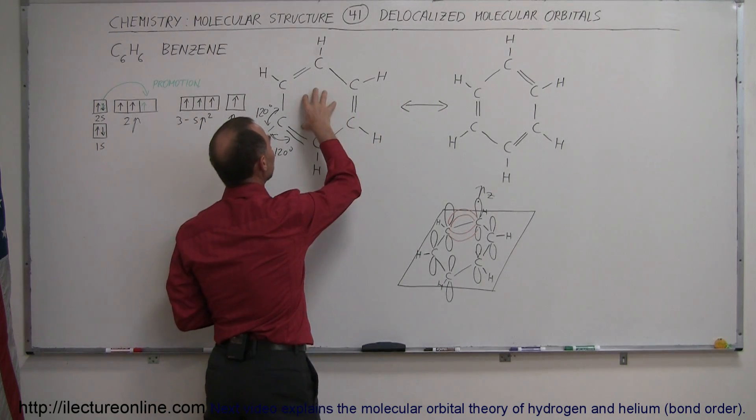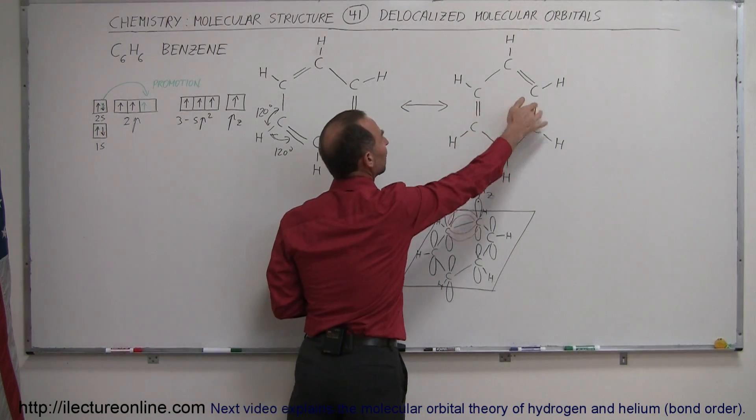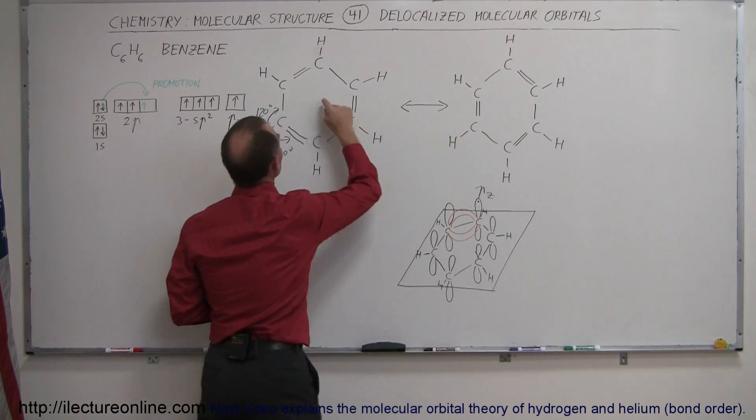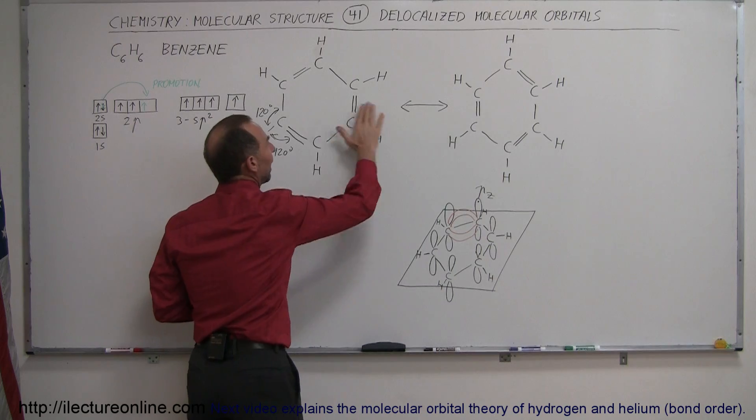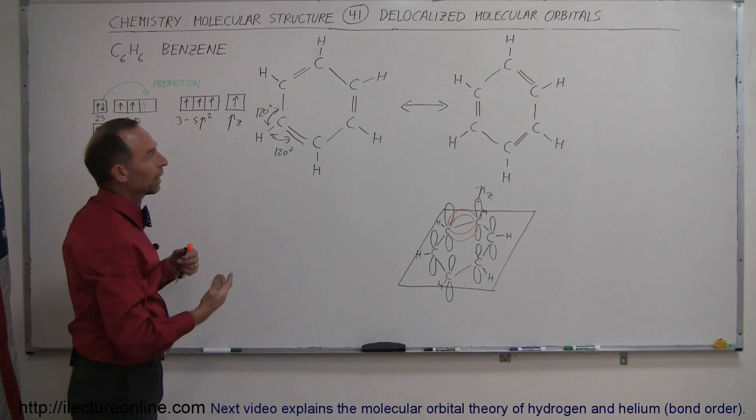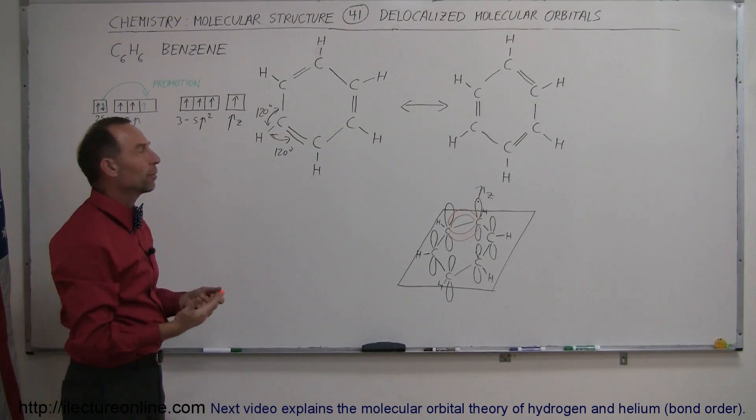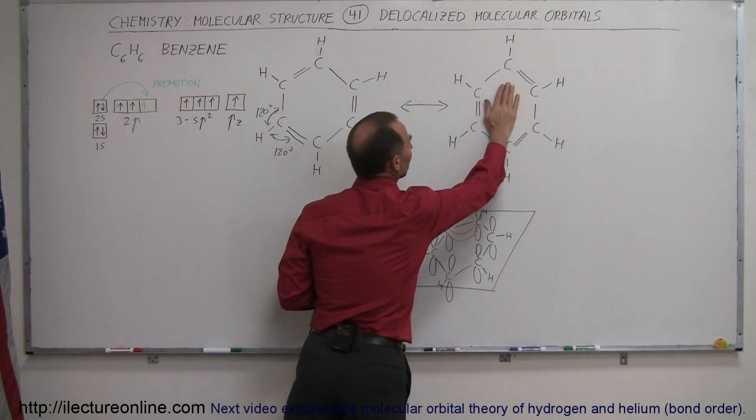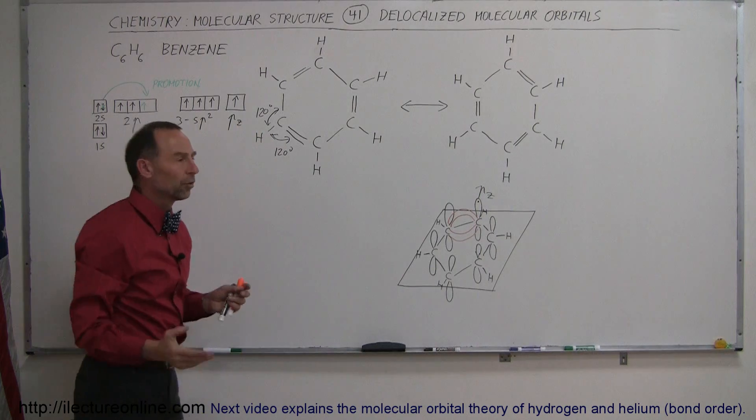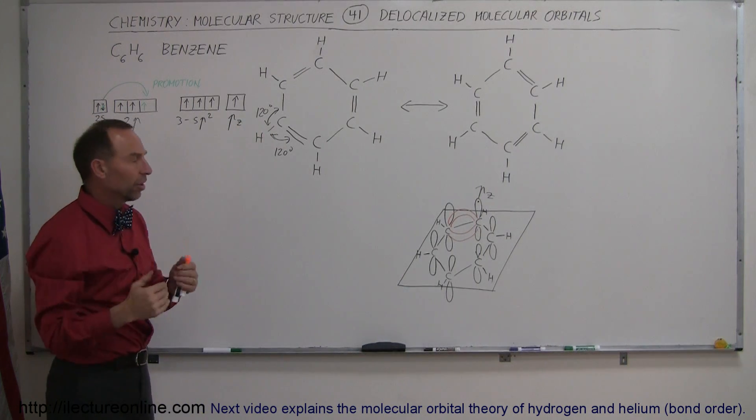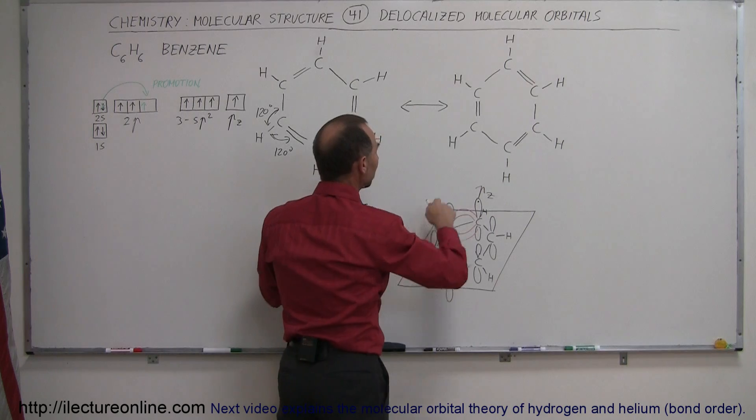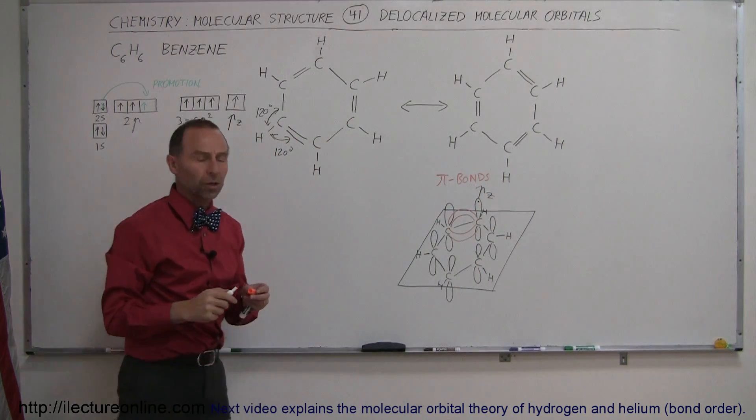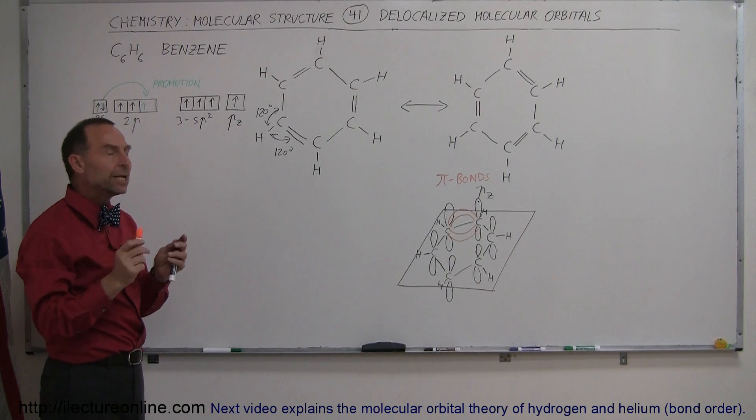But since there's no real difference between this arrangement and this arrangement, knowing that the double bonds are here, here and here on the right side, and are there, there and there on the left side, and we can go back and forth like that, we kind of assumed that it was kind of like a 50-50 arrangement where 50% of the time the bonds would look like this and 50% of the time the bonds would look like that. So that the pi bonds would alternately switch between the carbons. But that's not really what's happening.